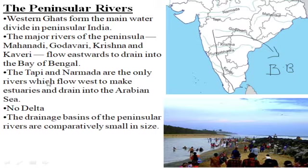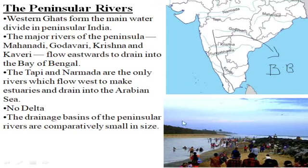The Tapi and Narmada are the only rivers which flow west, making estuaries, and drain into the Arabian Sea. These rivers form estuaries where they meet the sea. There is no delta because of the absence of hard rock and distributaries — these rivers have no distributaries and don't originate from hard rock, so they don't form deltas.